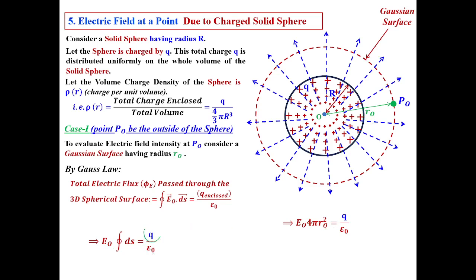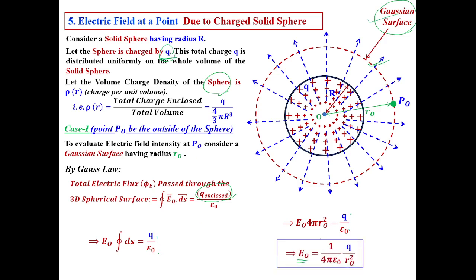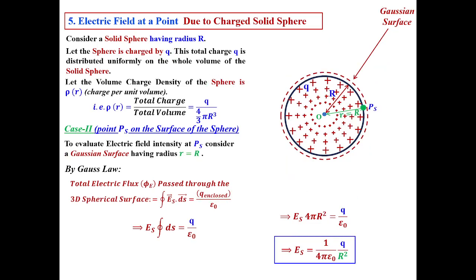So E_o × 4πr_o² = Q / ε₀. Here Q_enclosed equals Q because the Gaussian surface encloses the entire sphere charged by Q. Therefore, E_o = (1 / 4πε₀) × (Q / r_o²). This is the electric field intensity at any point outside the sphere.